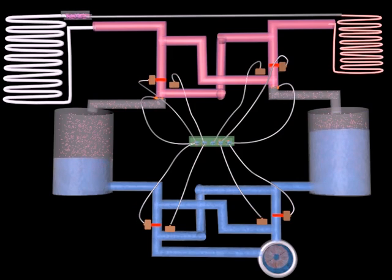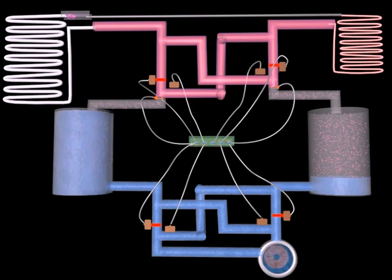And finally, at the upper left-hand corner we see an evaporator, colored in white, and a pink colored condenser at the upper right-hand corner.